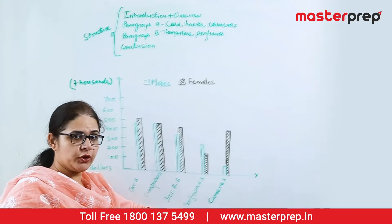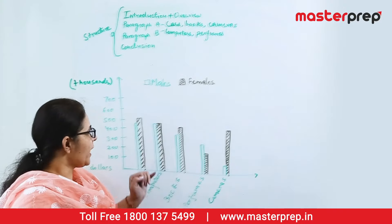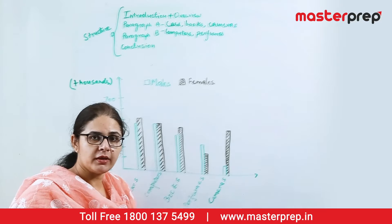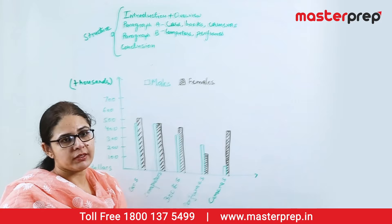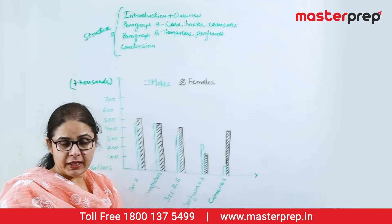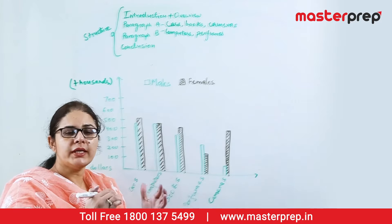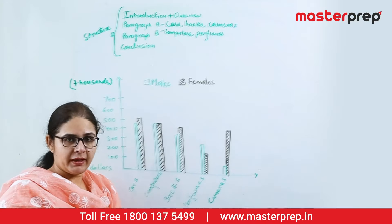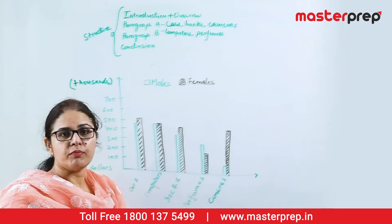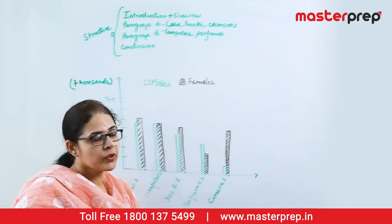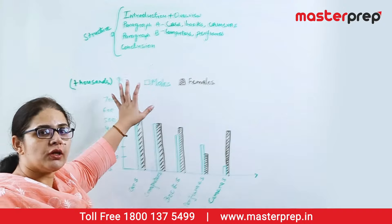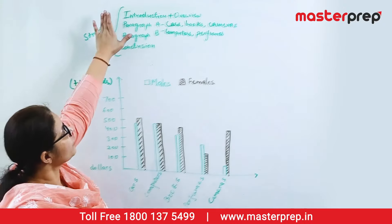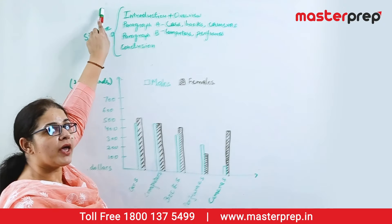So in the first part, we tried to understand what the graph is about — the x-axis, the y-axis, and the different consumer goods portrayed on the graph. We also understood the key. Now we are going to plan our writing: how many paragraphs we are going to write, and how we are going to logically divide our writing into various paragraphs.